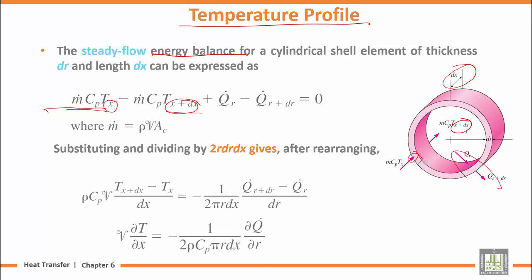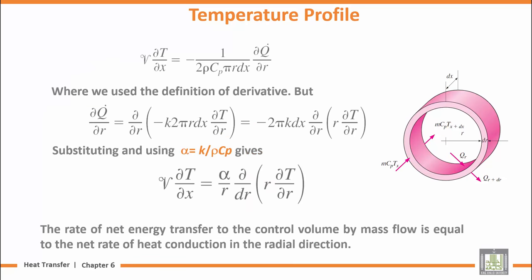Q goes through the cross section. We go to the definition of derivative for Q. This involves the area dT/dr. We rearrange using thermal diffusivity alpha over r times rho times Cp, which gives us the temperature gradient relationship.